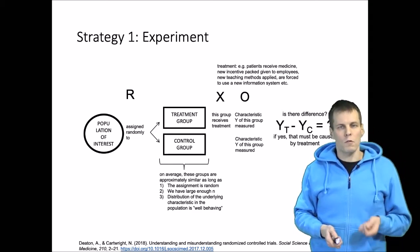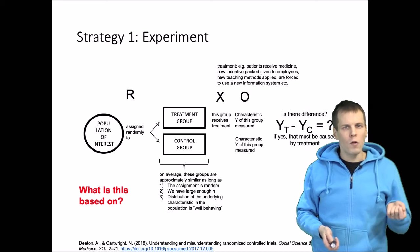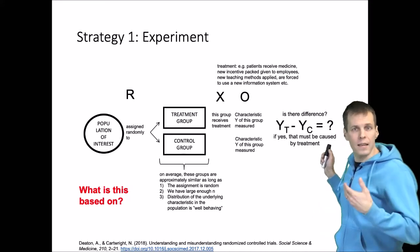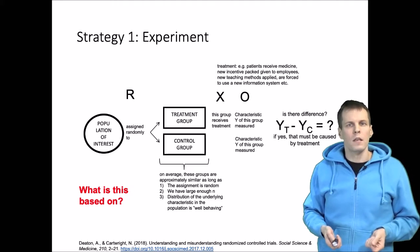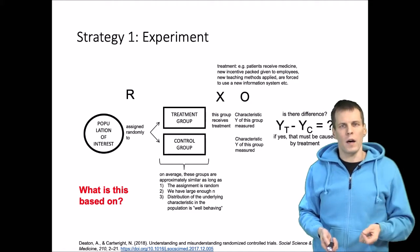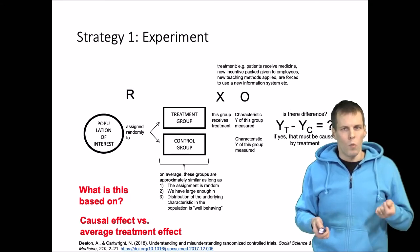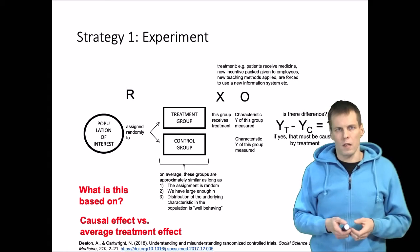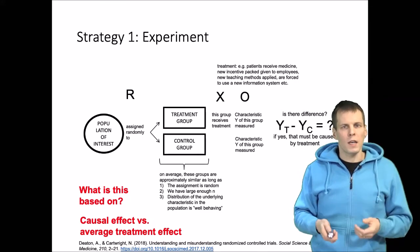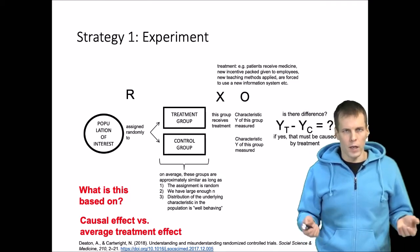Now there are two important issues about this model. First, what is it actually based on — how is it possible that this difference is a valid estimate of a causal effect? Second, this research design does not provide us an individual causal effect but instead gives us the average treatment effect. So why can't we get an individual-level causal effect? Before addressing that, we need to understand what causality is and why we need to define it in some way to do research.